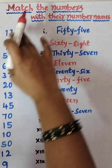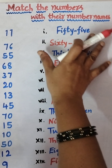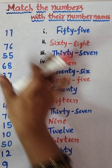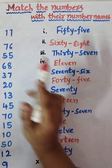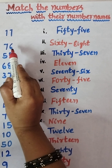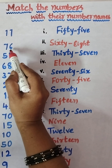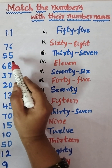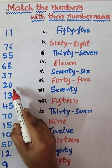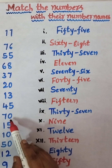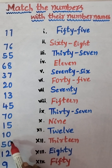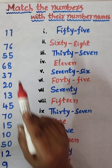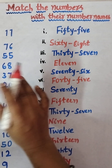Here I already wrote the numbers, and here I wrote the number names. We just have to match the numbers with the number names. The numbers are: 11, 76, 55, 68, 37, 20, 13, 45, 70, 15, 10, 50, 12, and 9. Now we have to match them.